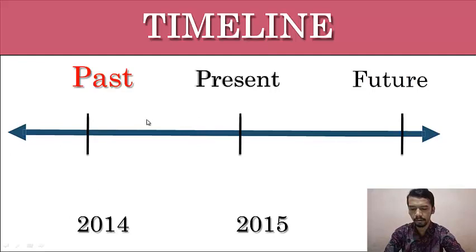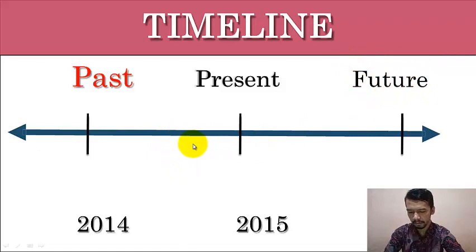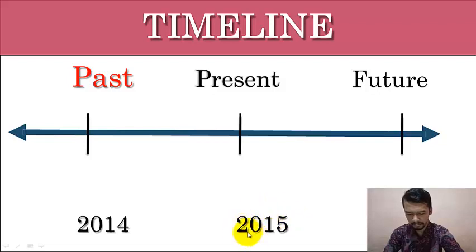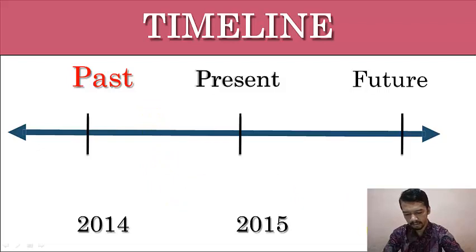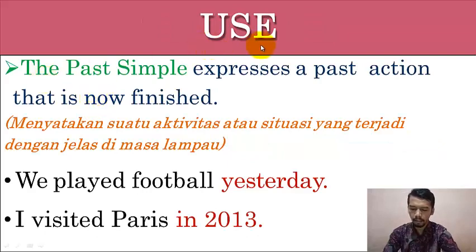Look at the chart here. In learning tenses, we know the very basic tenses: the first one is present, the second is past, and the third is future. For example, if I give the present year as 2015, the year before — 2014 — we call simple past, and one year later, 2016, we call future. That is the simple way we look at these tenses.